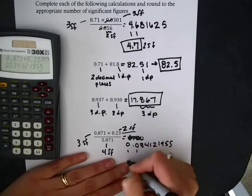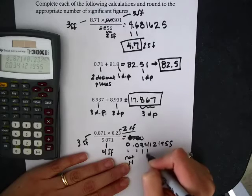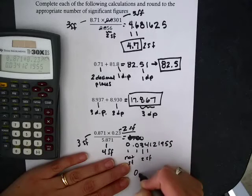Now, in my answer, the zeros in front do not count. So I need 2. So it's going to be 0.0034.